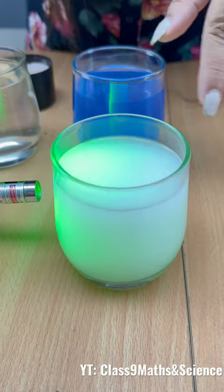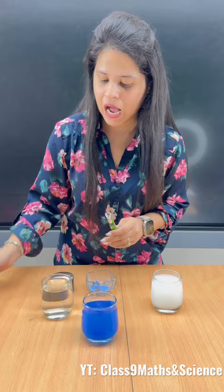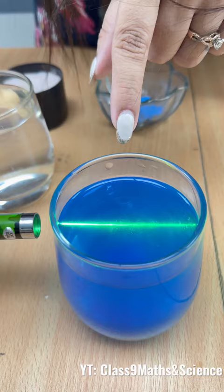Now, let's look at the chalk powder here. Let's look at the glass. So, let's move the particles here. And now, when I pass the light here, you will see the light scatters — the particles are visible.